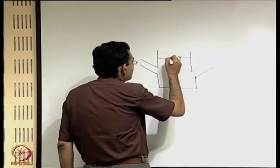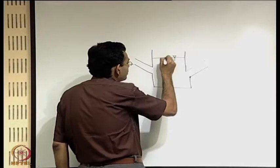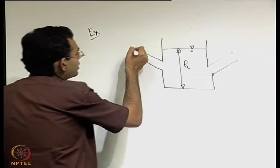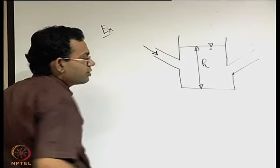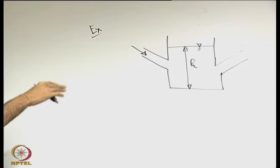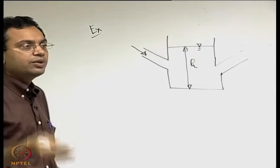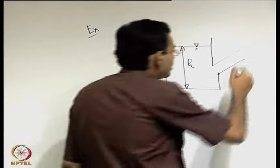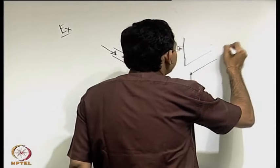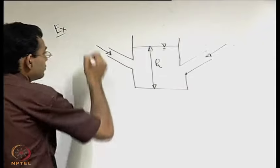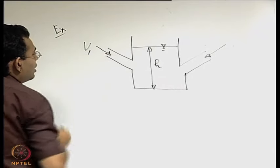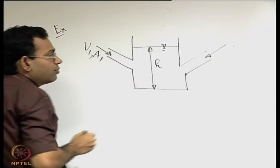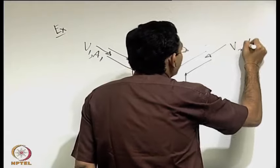Let us say that the height of the free surface from the bottom of the tank is h. To simplify the situation, we go back to a case of a uniform velocity profile, since we have already seen that for a non-uniform profile we just integrate the velocity profile over the section. So let us say you have a velocity v1 with area of cross section a1 at one inlet, and velocity v2 with area of cross section a2 at another inlet.